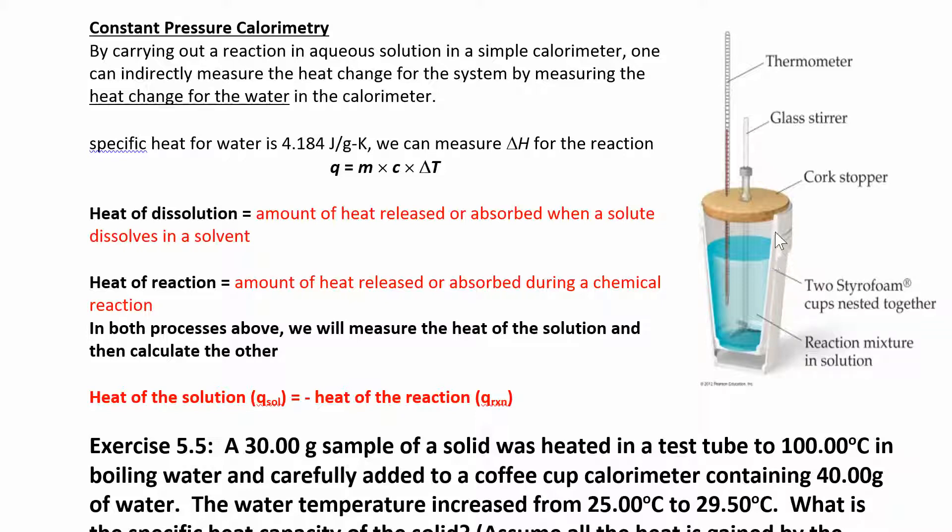So two cups nested together. Instead of having a glass stirrer, we're gonna have a magnetic stir bar that'll go down in here and stir everything constantly. And instead of a thermometer, we may be using the lab quest units or some kind of thermometer here.